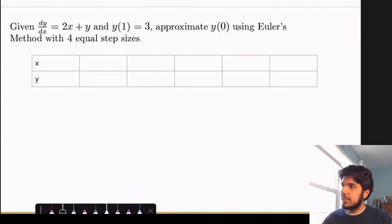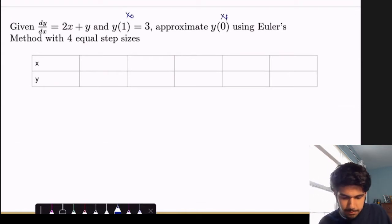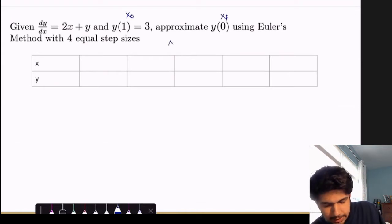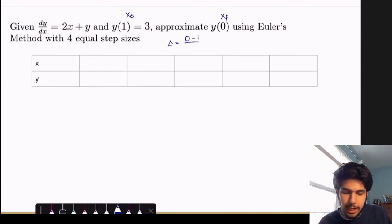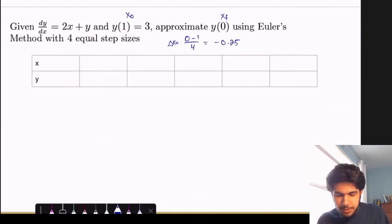So the first thing we want to do is compute our step size. So this will be our starting point. This will be our final point. So our delta x should be our final minus the initial divided by how many step sizes we want, which is 4. So this is negative 0.25.